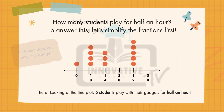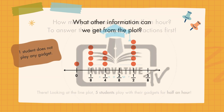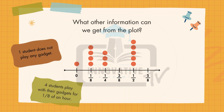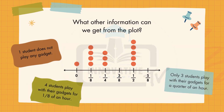What other information can we get from the plot? One student does not play any gadget. Four students play with their gadgets for one-eighth of an hour. Only three students play with their gadgets for a quarter of an hour.